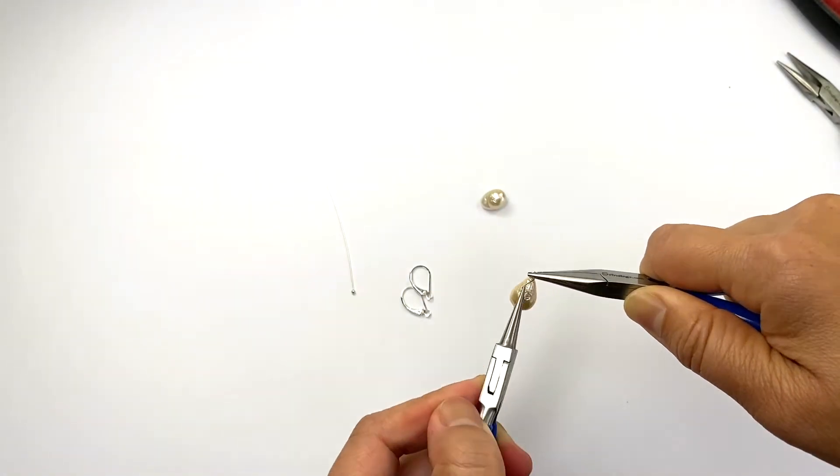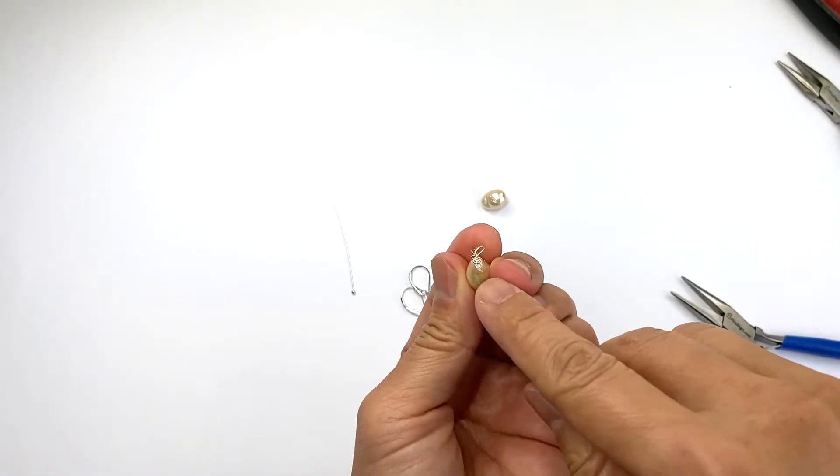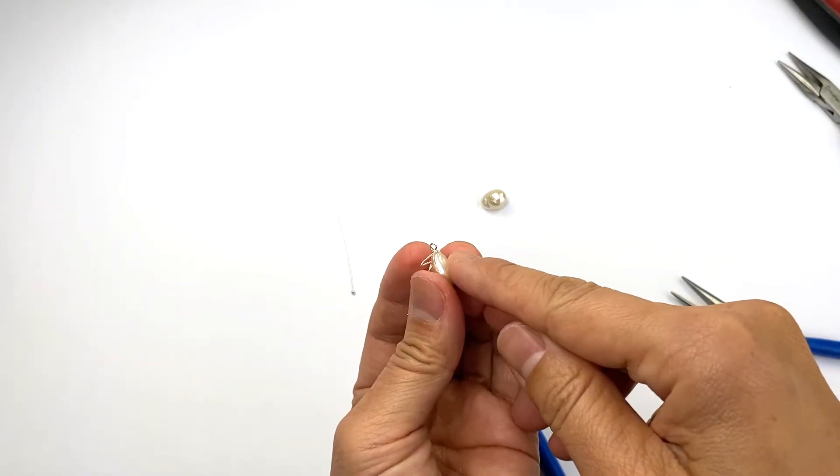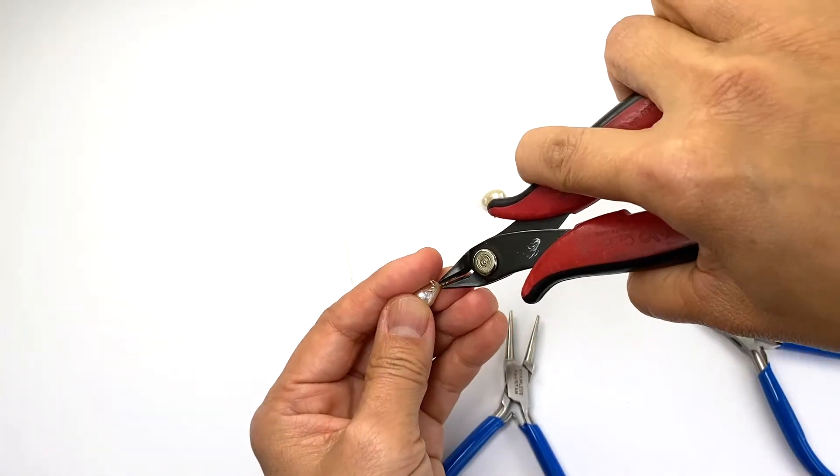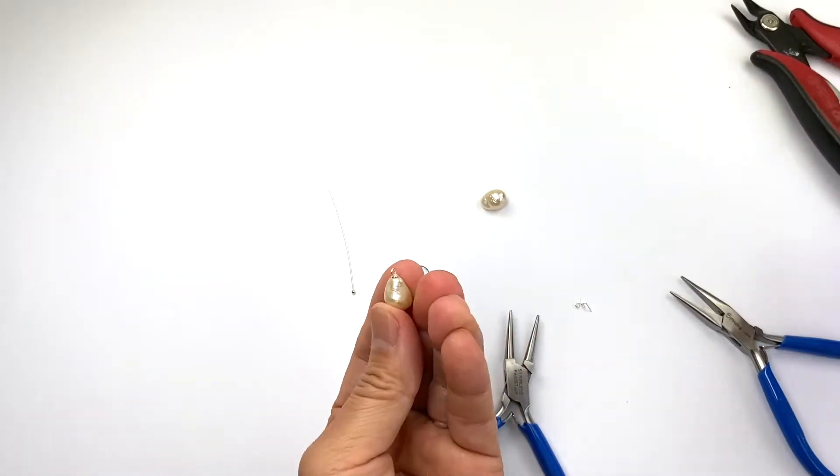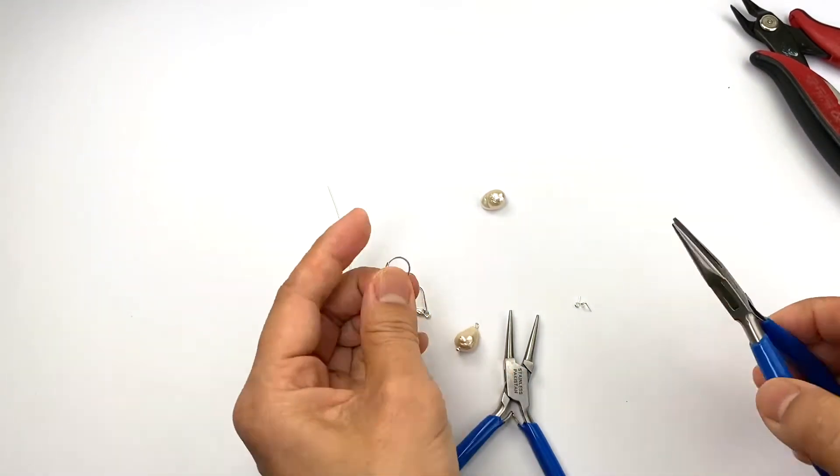So now I wrap it around like this so that it's tight at the base and if I want to make more wraps I just continue on but I'm happy so I trim it like this and now you're ready to add on the hook.